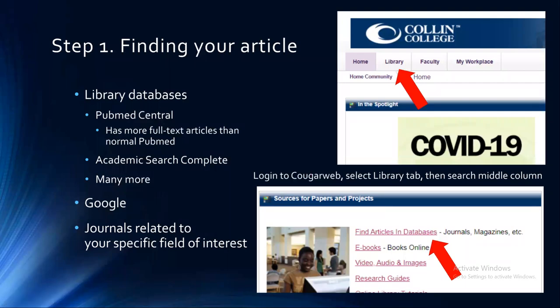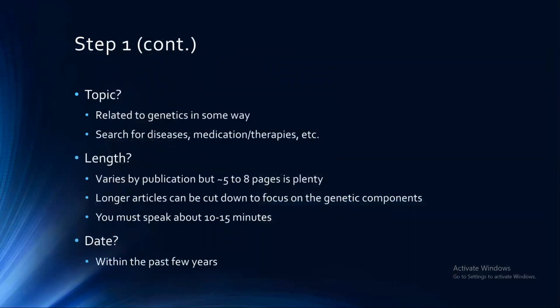You can also search on Google, and Google Scholar has a lot of papers available too. Or if there is a journal you subscribe to, like one covering cardiac incidents, you can use those as well. It just has to be a primary research article. Your topic needs to be related to genetics in some way. Most of the time people start by looking at a disease they want to learn more about or a specific medication, something like that.